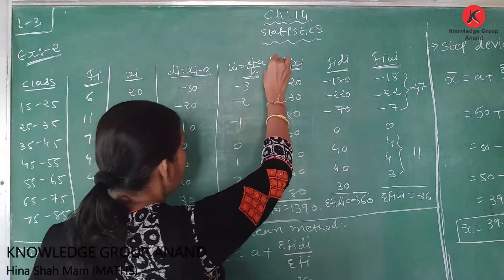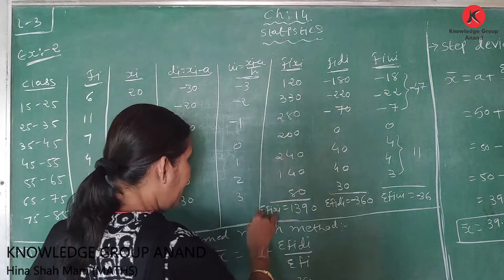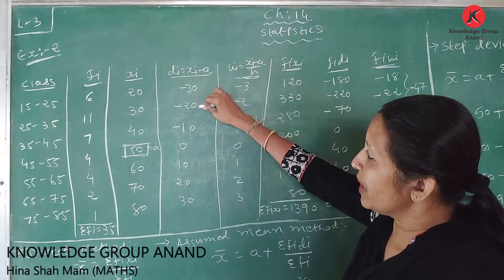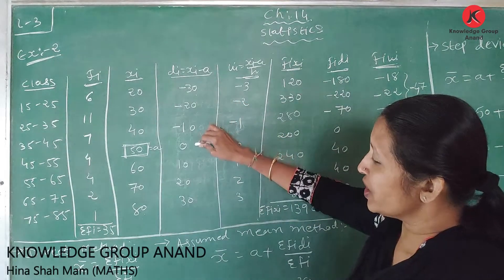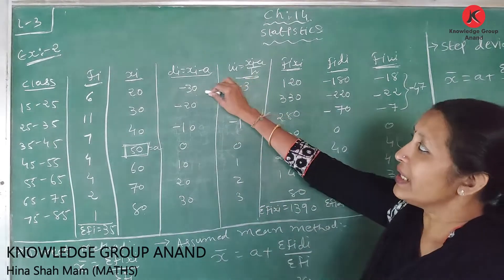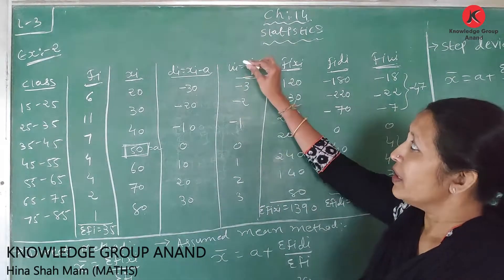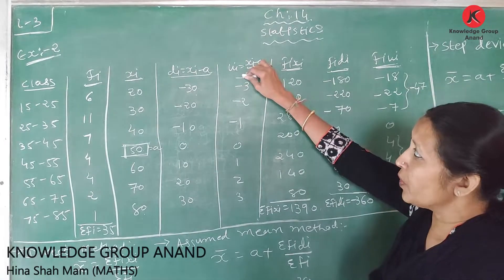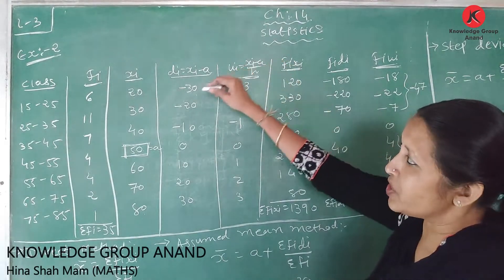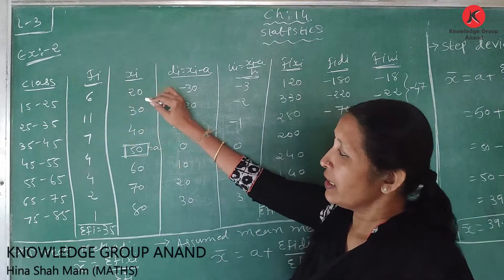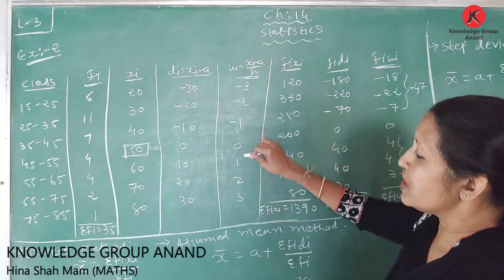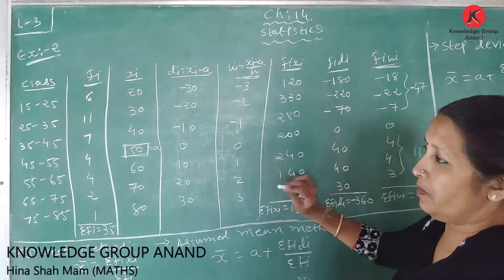Now find ui. The common factor in di is 10. So we divide di by h = 10 (the class size), giving ui = (xi - a) / h. The ui values are: -3, -2, -1, 0, 1, 2, 3.